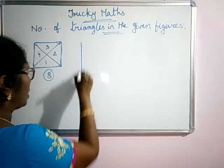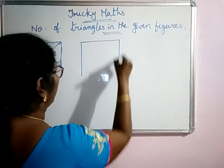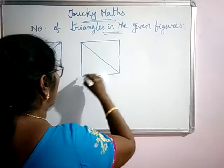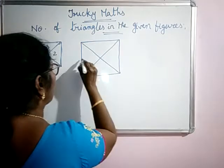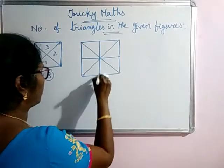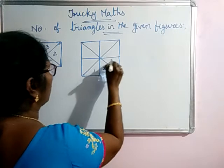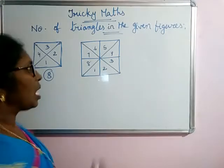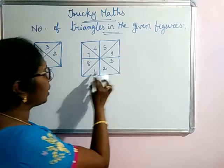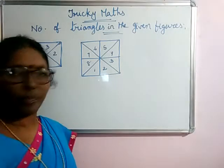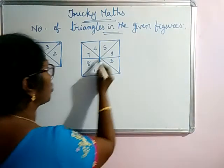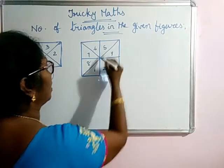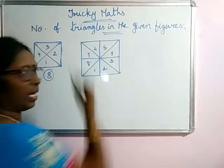Now suppose a square is divided into 8 triangles — 1, 2, 3, 4, 5, 6, 7, 8. Here if you count, all the smaller triangles are 8. After that you see these 2-triangle combinations: 9, 10, 11, 12.